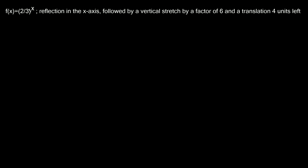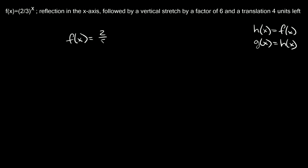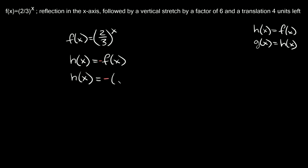Here's the second one. We have f of x is equal to two-thirds raised to the x, and the transformations are a reflection in the x-axis. So again, step one: h of x is equal to f of x. Then g of x is equal to h of x. Applying the first transformation, a reflection in the x-axis is just multiplying a negative sign by our function, giving us h of x equal to negative two-thirds raised to the x.